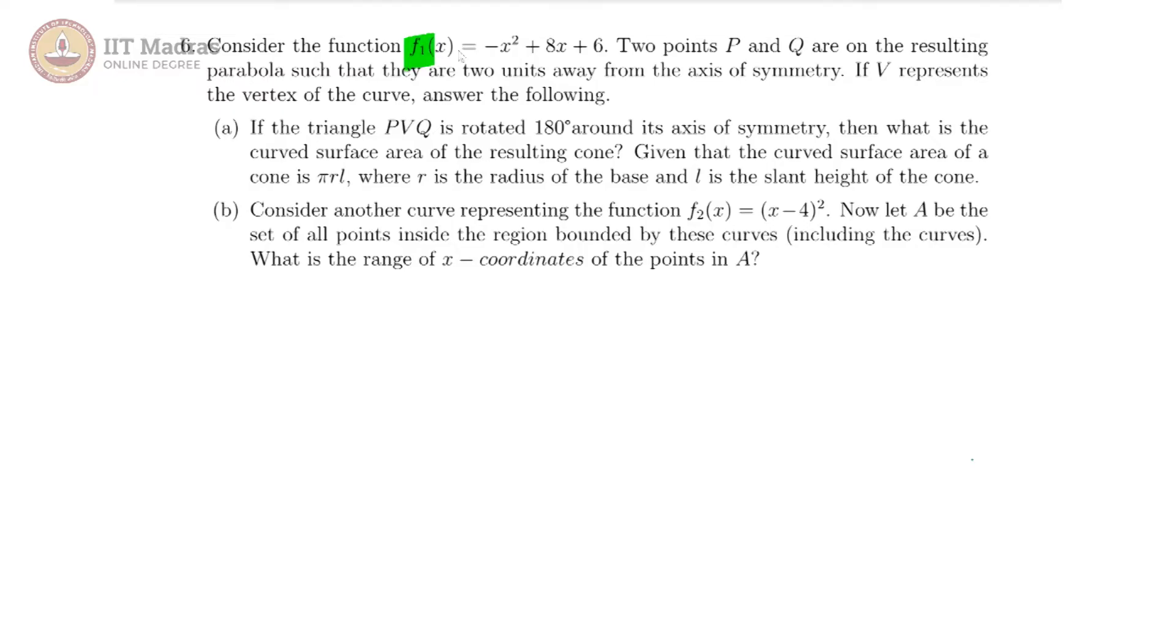In our sixth question, we are given this particular quadratic function minus x square plus 8x plus 6, and we are told that there are two points p and q which are on this parabola such that they are two units away from the axis of symmetry. So let us try to find out what the axis of symmetry is for this parabola.